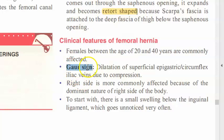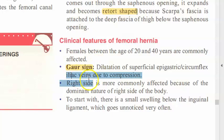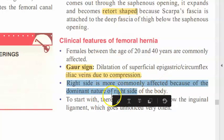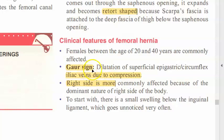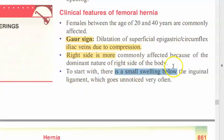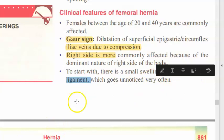Clinical features: females aged 20 to 40 are commonly affected, especially those who have delivered multiple times. There is Gore's sign — dilatation of the superficial epigastric and circumflex iliac veins, indicating venous compression. The right side is more commonly affected due to the dominant nature of the right side of the body. The swelling starts small and then enlarges.